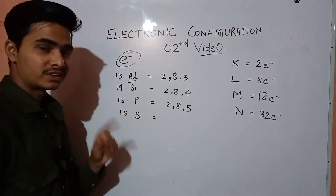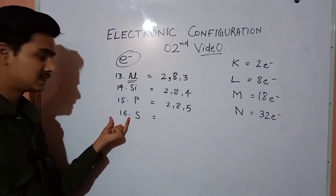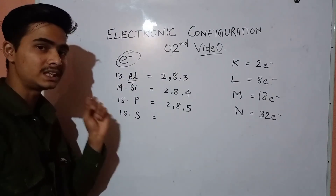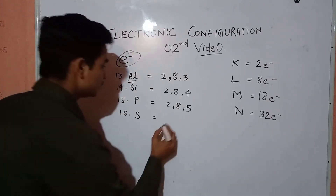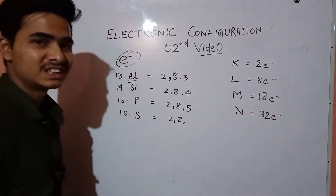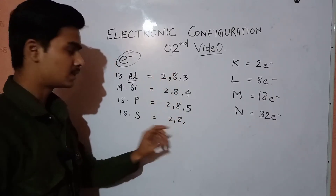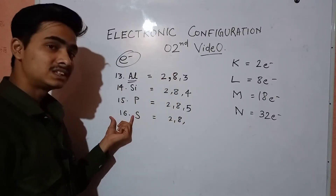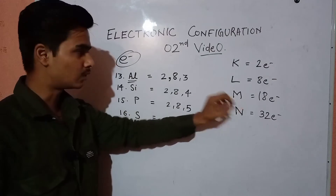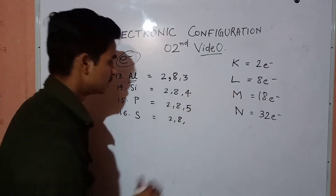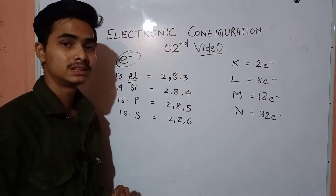What is the electronic configuration of sulfur? Sulfur has 16 electrons — the atomic number equals the number of electrons. The first 2, 8 is the same pattern. Where will the remaining 6 electrons go? Into the M shell. So the electronic configuration of sulfur is 2, 8, 6.